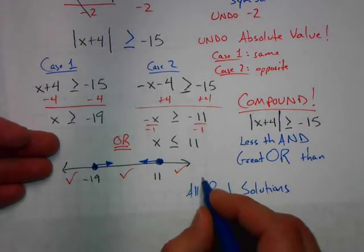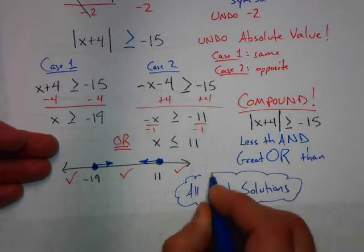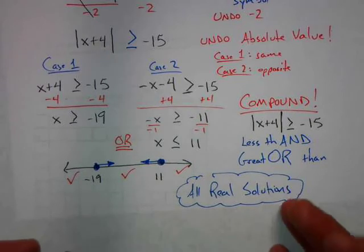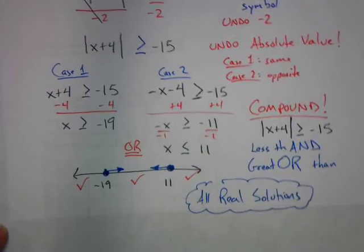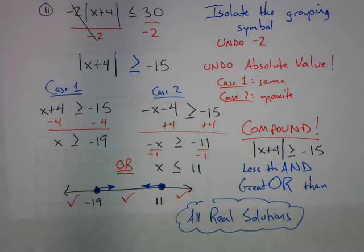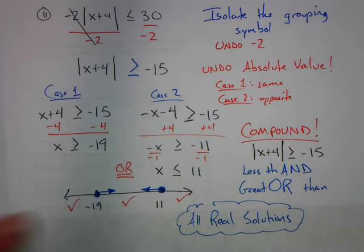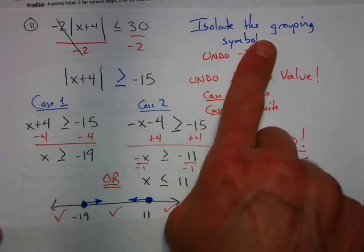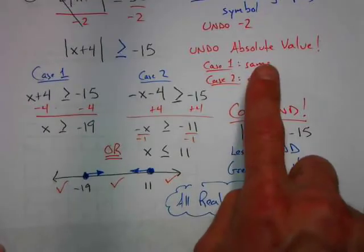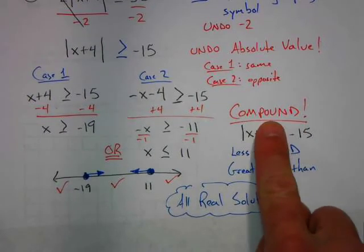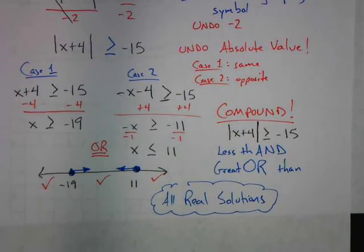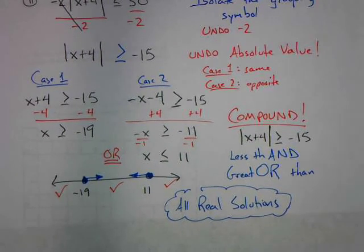The answer is all real numbers — infinite solutions. We have to be careful because of the word 'or,' and you can use this to reinforce your understanding of compound inequalities. To recap: isolate the grouping symbol, undo what's needed, undo absolute value with case one and case two, determine 'and' or 'or' for the compound inequality, then check your answers by reading it out loud. That's how we solve absolute value inequalities.